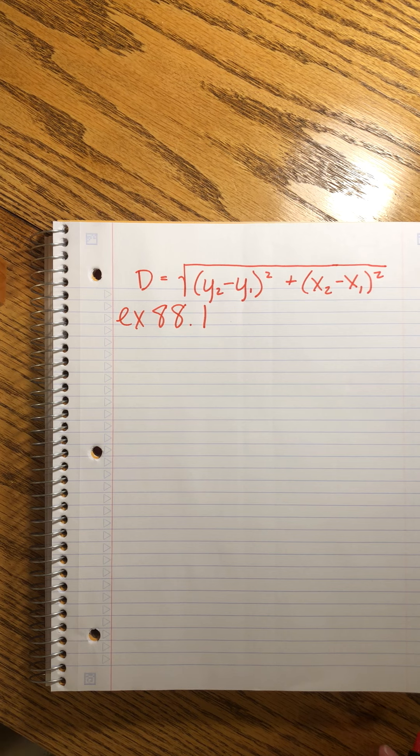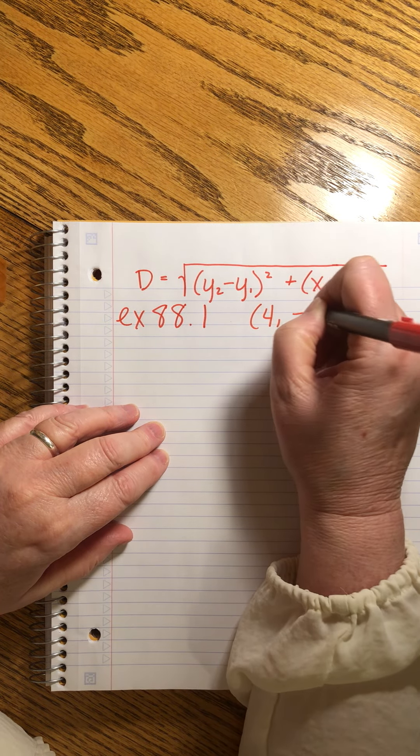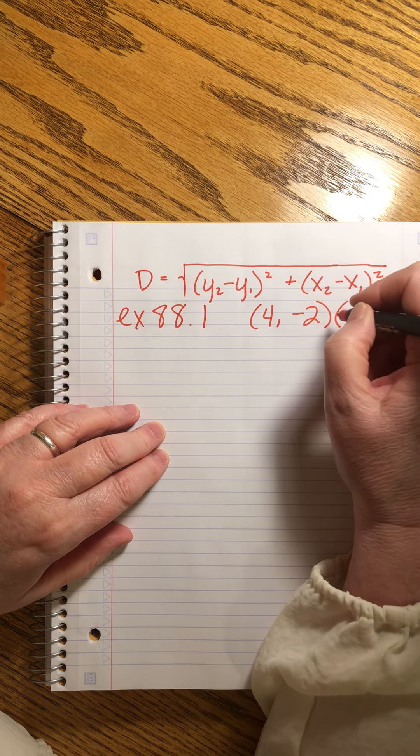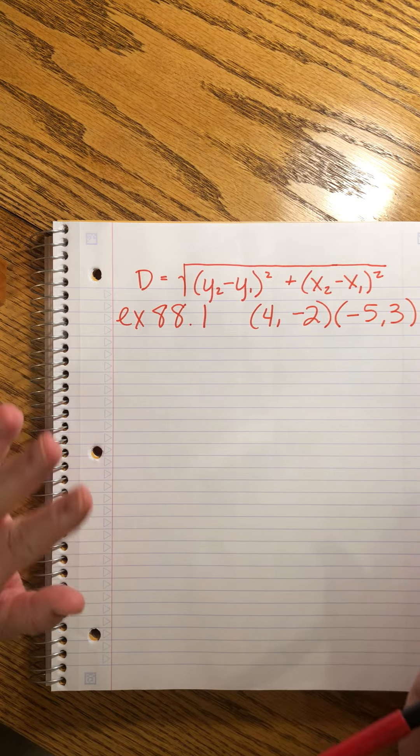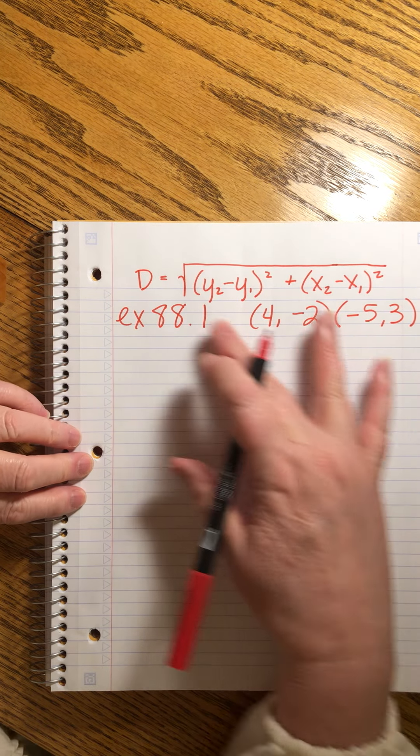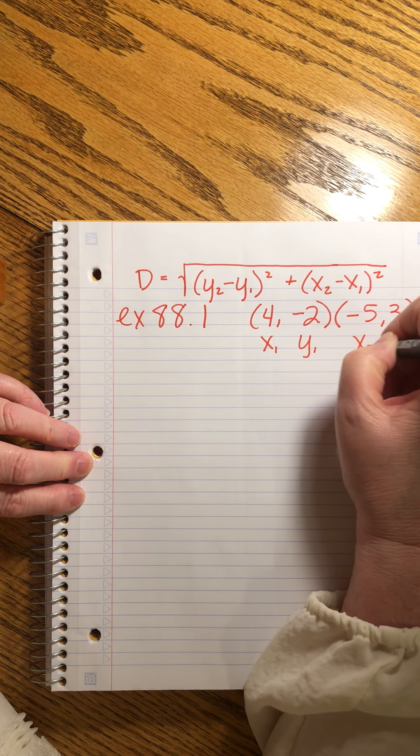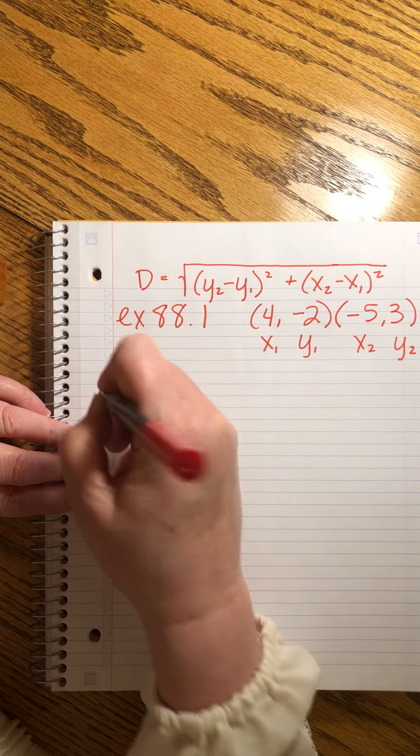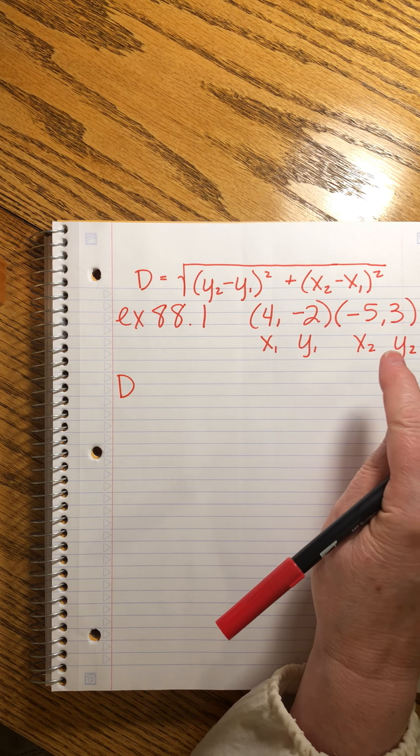Now we're ready to dive right in and use this in a problem. And the problem, there's only one with this. Use the distance formula to find the distance between 4 minus 2. Oh, look, it's the problem we were already working. How did I know? Minus 5 and 3. We're not going to draw the graph. We're not going to graph any points. We're simply going to use these values and plug them in here. Let's do this x1, y1, x2, y2.